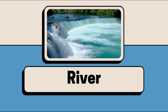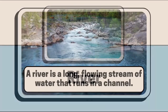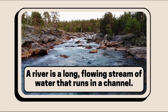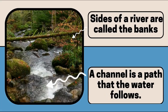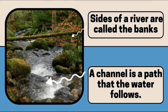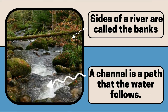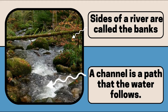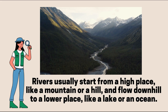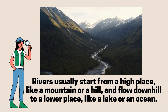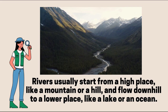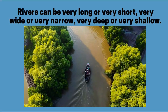One type of water body is a river. A river is a long flowing stream of water that runs in a channel. A channel is a path that the water follows. The bottom of the channel is called the bed and the sides are called the banks. Rivers usually start from a high place like a mountain or a hill and flow downhill to a lower place like a lake or an ocean.